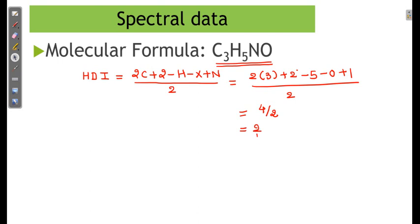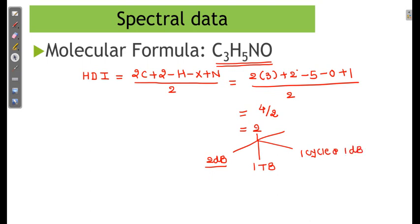Based on this HDI of 2, I can say the possibilities are: 2 double bonds, or 1 triple bond, or 1 cycle and 1 double bond, or 2 cycles.